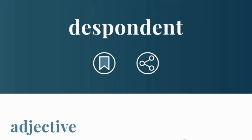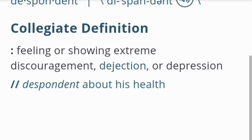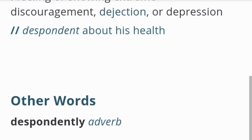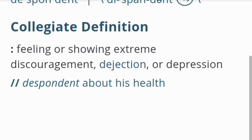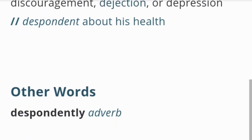The second word we'll be learning is 'despondent,' which reminds me of the word correspondent. Despondent is an adjective — a ten-letter word with three syllables — and it means feeling or showing extreme discouragement, dejection, or depression. It's the only word we've learned so far that embodies great sadness or an extreme form of sadness, so it's the best word when describing such a situation. Other words formed from it include 'despondently,' which is an adverb.